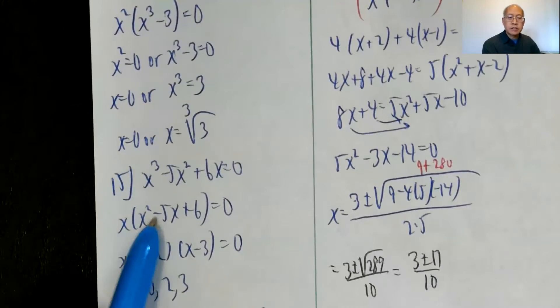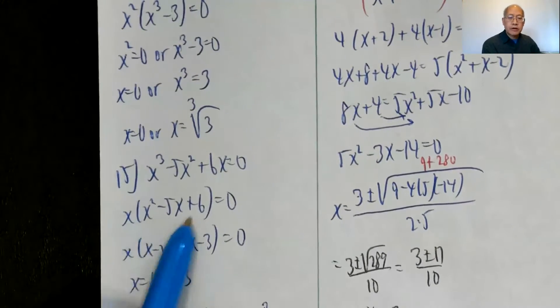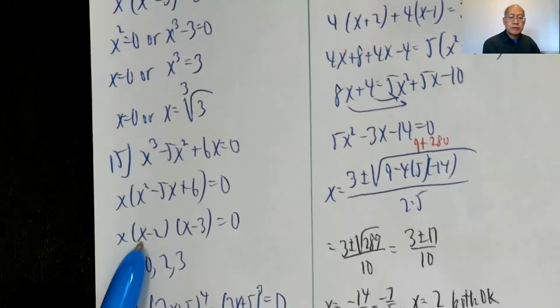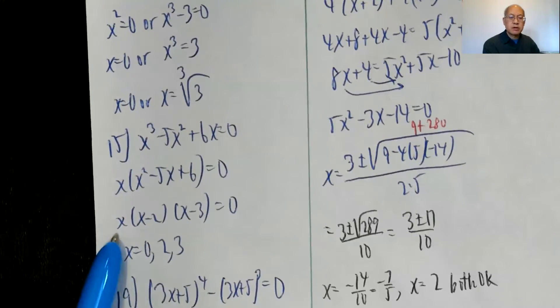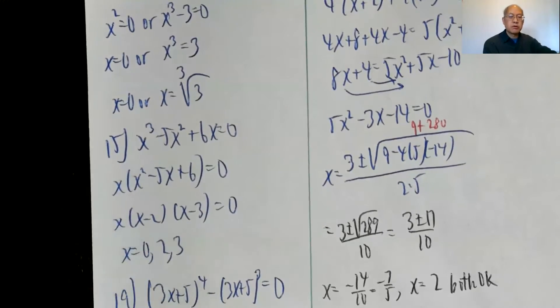Problem fifteen: factor out an x, factor further, x times x minus two times x minus three, so x is zero, two, or three.